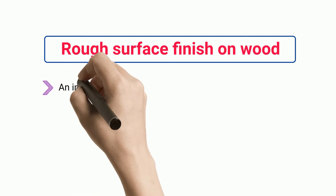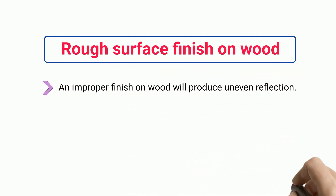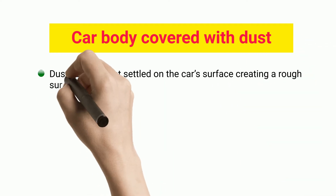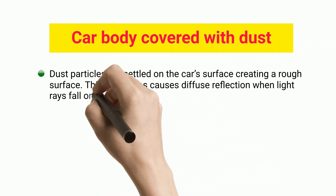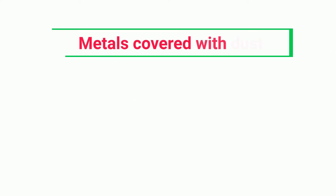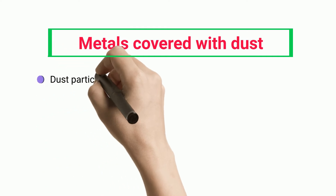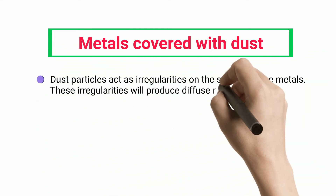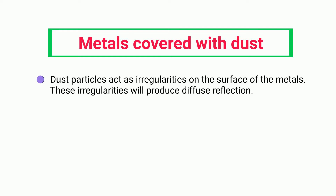Rough surface finish on wood: an improper finish on wood will produce uneven reflection. Car body covered with dust: dust particles settle on the car's surface, creating a rough surface. This roughness causes diffuse reflection when light rays fall on the car's surface. Metals covered with dust: dust particles act as irregularities on the surface of metals, and these irregularities will produce diffuse reflection.